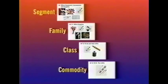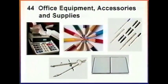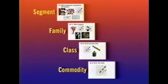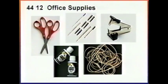Levels are given a two-character numerical value. The first is the segment level — a segment is the logical aggregation of families for analytical purposes. Office equipment, accessories and supplies is an example of the segment level of the code's hierarchy. The code's second level is family, which is a commonly recognized group of interrelated commodity categories. Office supplies would be found at this level.